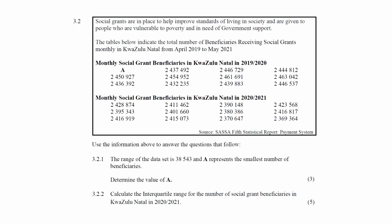Question 3.2 consists of two data handling questions designed to assess your understanding of statistical analysis. You are given a context stating that social grants are in place to help improve living standards and are given to people vulnerable to poverty and in need of government support. The tables indicate the total number of beneficiaries receiving social grants monthly in KwaZulu-Natal from April 2019 to May 2021.